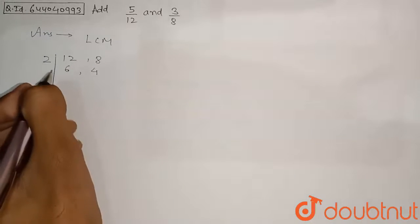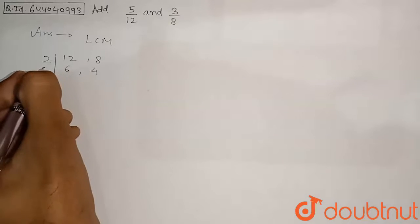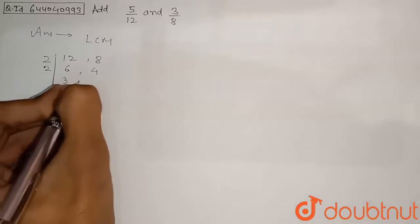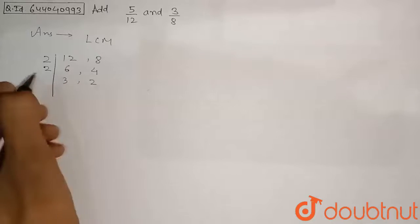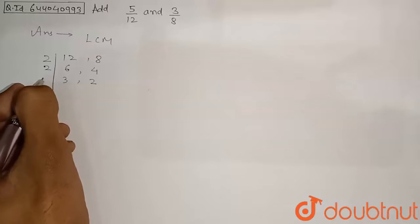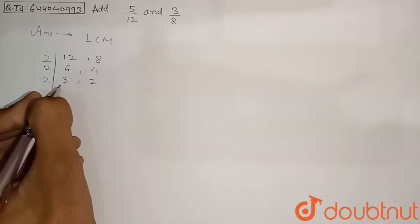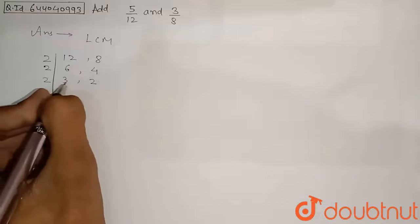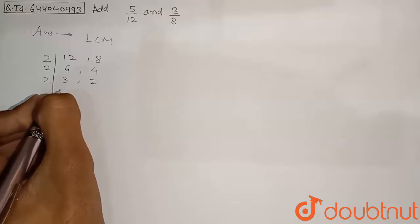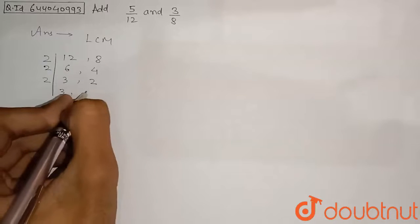Again we divide both numbers by 2. We get 3 and 2. Dividing again by 2: 3 is not divisible by 2, so we keep 3 as is and divide 2 by 2 to get 1.